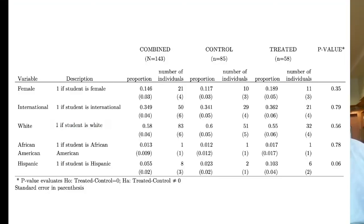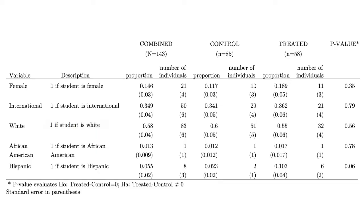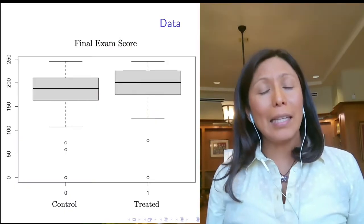Here I'm showing you the data that I got. Basically, the control and the treatment groups have exactly the same composition — between males and females, international students, and white and non-white students. As you can see, my institution is very homogeneous. I only had one African American in one period and one African American in the other. That means that in eight semesters, I've only had two. And I've had, in total, eight Hispanic students. So there's basically no statistical difference between the control and the treatment.